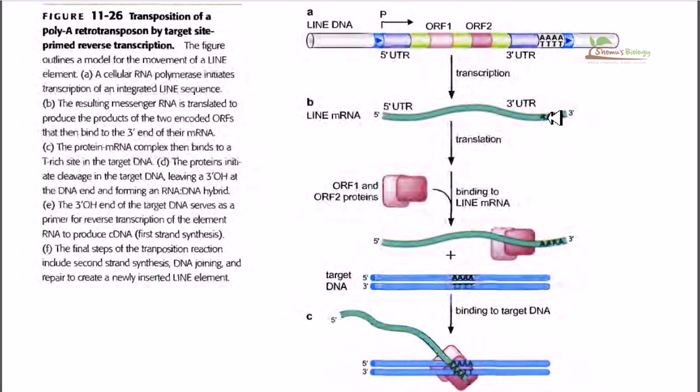This polyA sequence is really important because this sequence determines at what site in the target DNA this transposable element is going to bind. Because before the synthesis of complementary DNA, the transposition actually begins for this type of transposons.